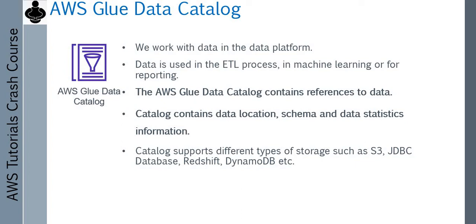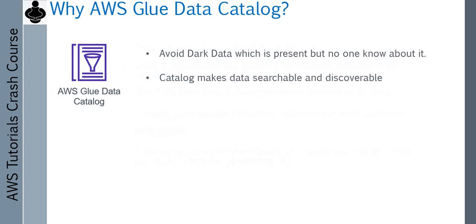So why do we need to create a data catalog? Why is it important? The problem is that if you have data in your data platform but you have not given it any kind of identification or name, then the data is dark data. It is not searchable, it is not discoverable — data is there in your platform but no one knows where it is. So by creating a catalog for your data, you are giving searchability and discoverability to your data. That means people can come to the data catalog and know what different data exists in your data platform just by looking at the catalog.